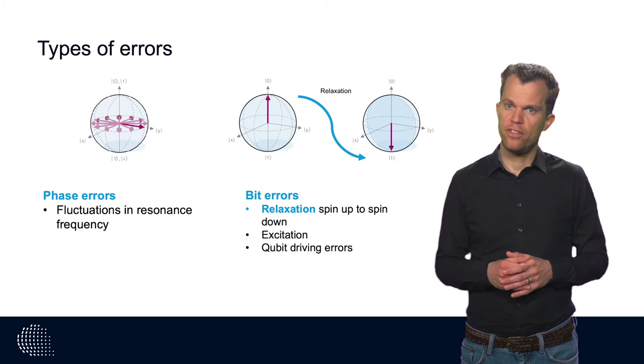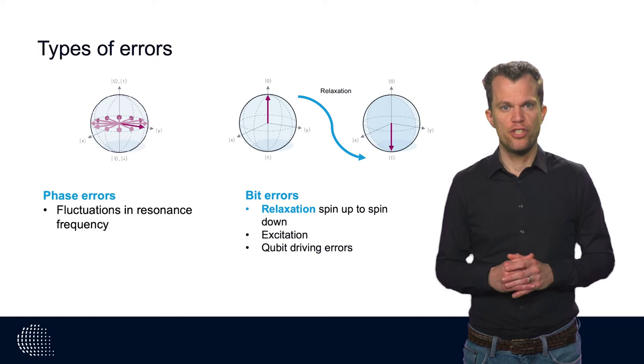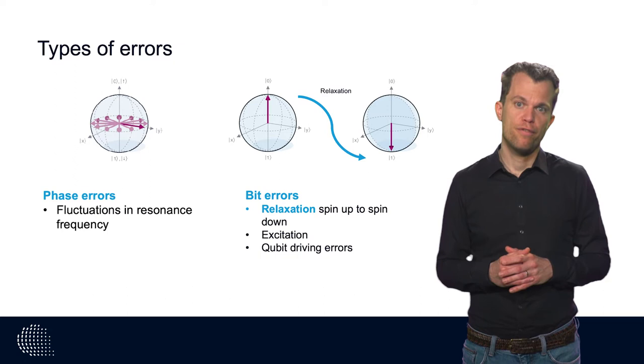As we learned in the beginning, an electron spin evolves in time with the Larmor frequency. If the Larmor frequency changes over time, this will lead to an accumulative phase, and thus a phase error.